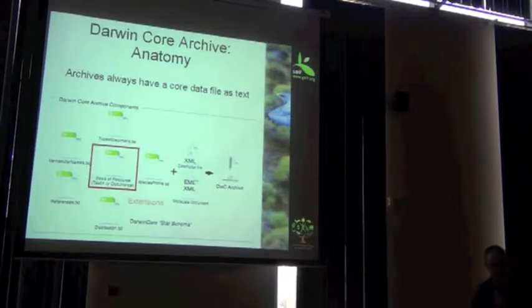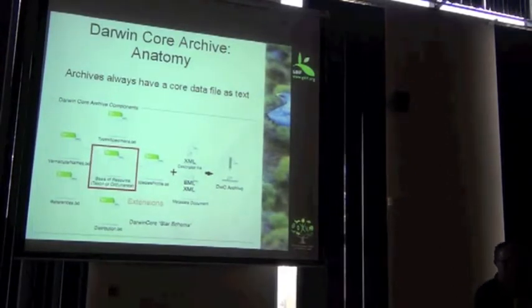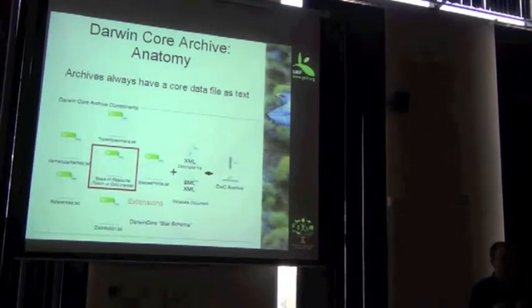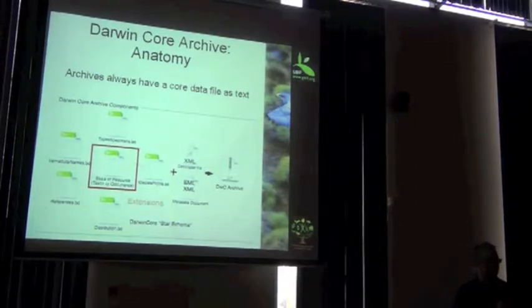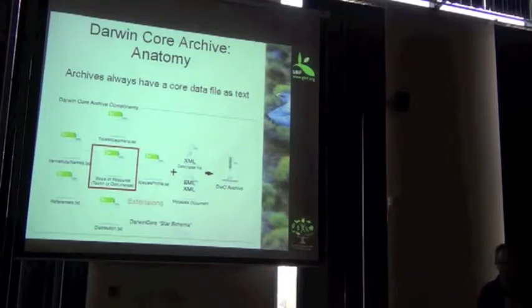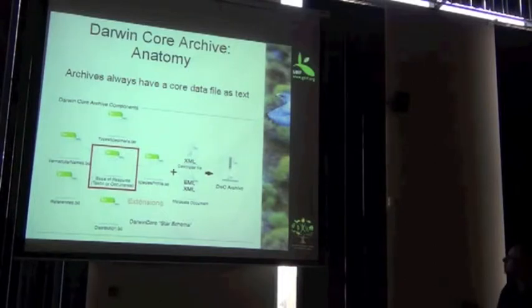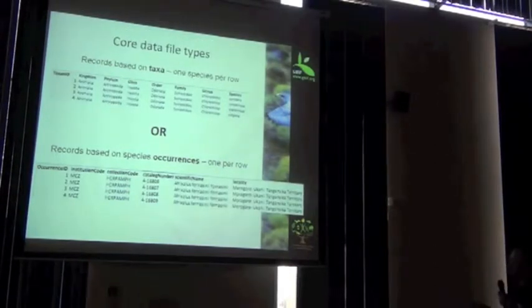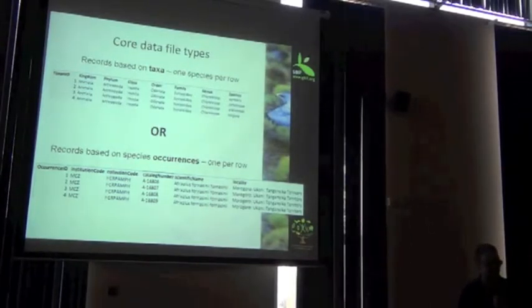The next component is your core file. For people working in spreadsheets, imagine it's just your primary spreadsheet table. But it's a text file, it's a CSV file. It's either taxon or occurrence. And so here's a couple of examples.